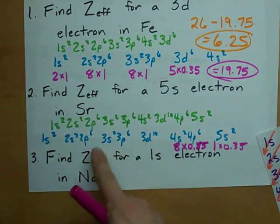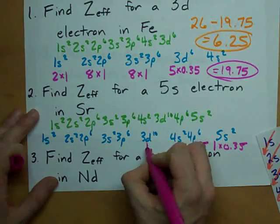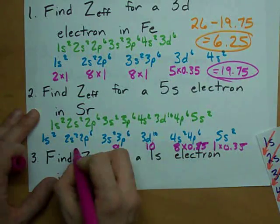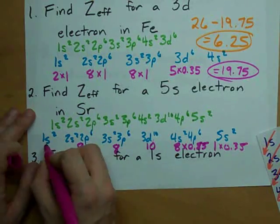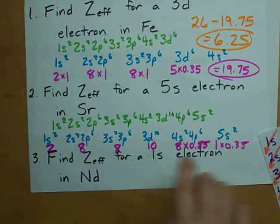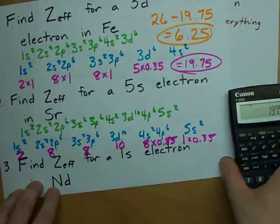And we subtract 1 for every electron two or more shells lower. That's the third shell or lower. So we're going to subtract 10 for these, 8 for all these, 8 for all these, and 2 for all those. These are all the amounts of shielding that each electron contributes.